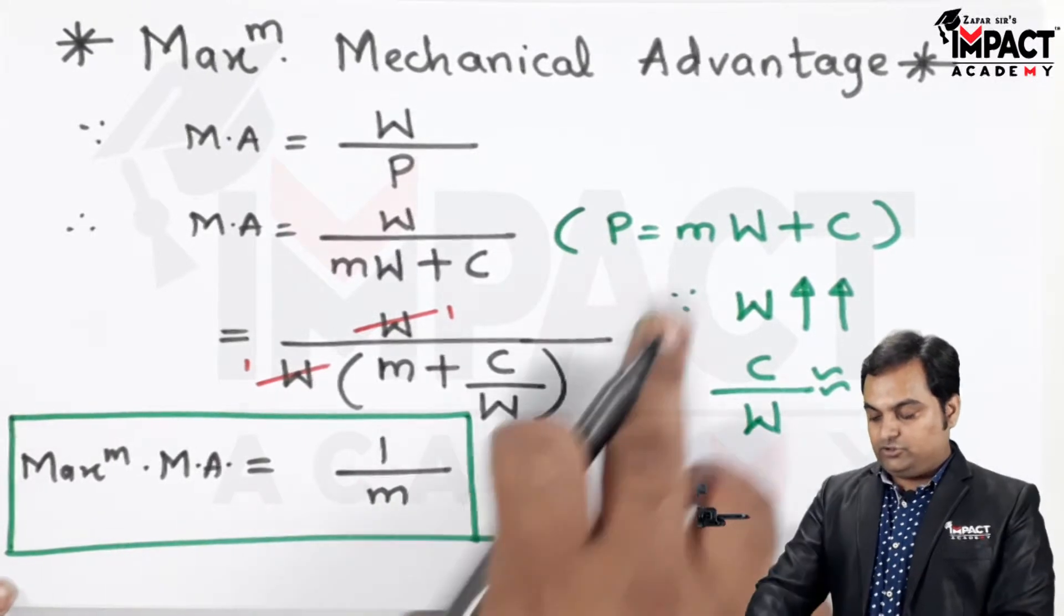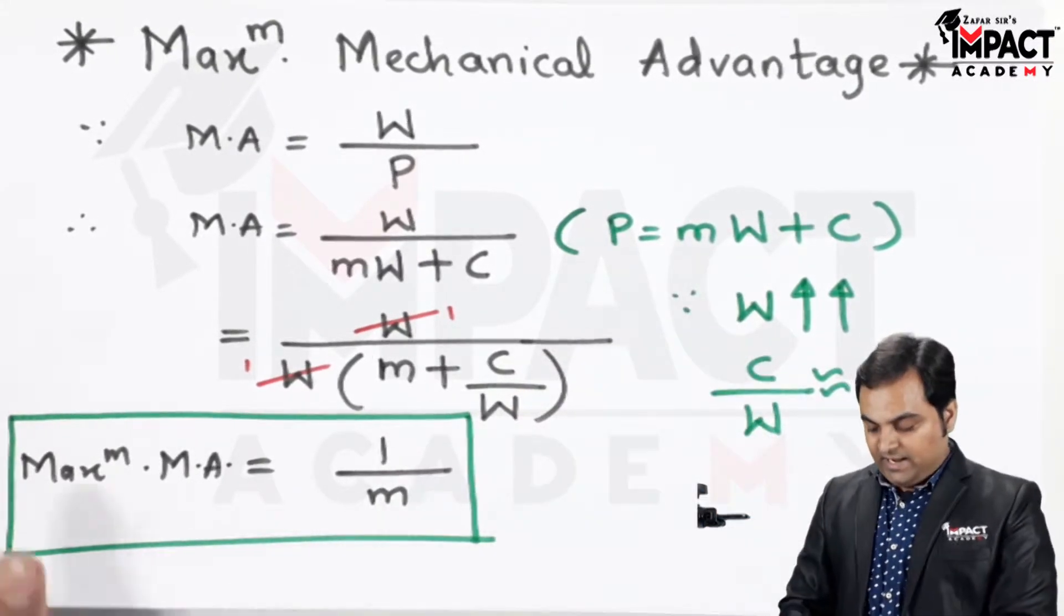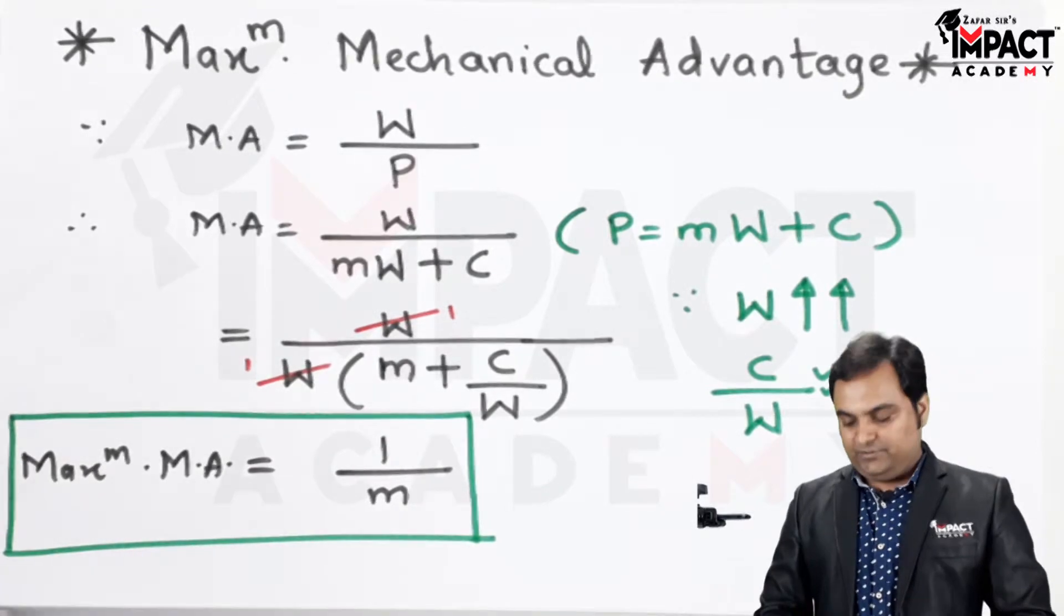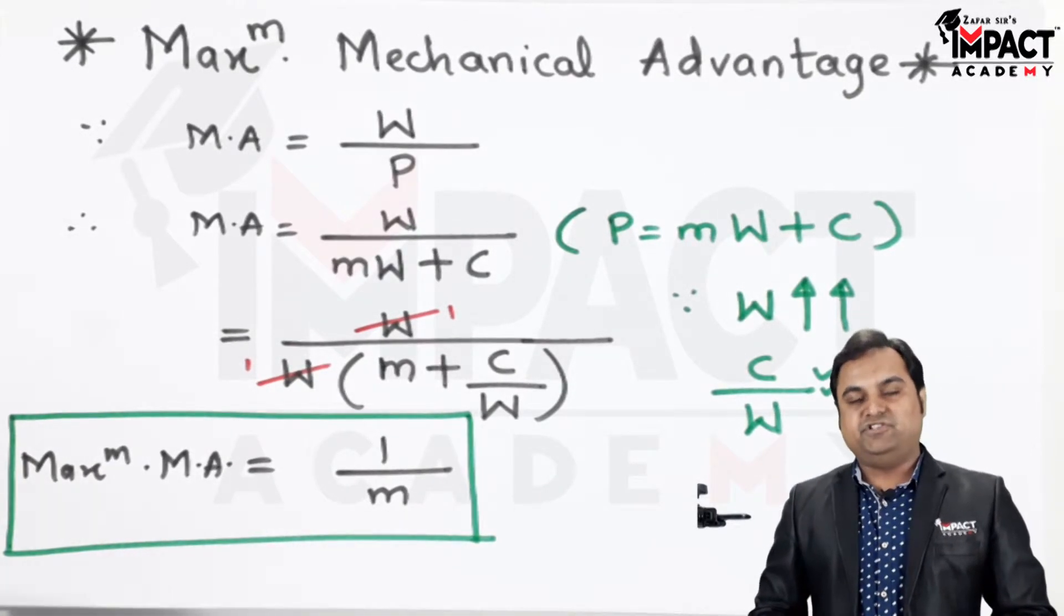And M is the slope which is there in case of law of machine. And by using this maximum mechanical advantage, we can calculate the maximum efficiency.